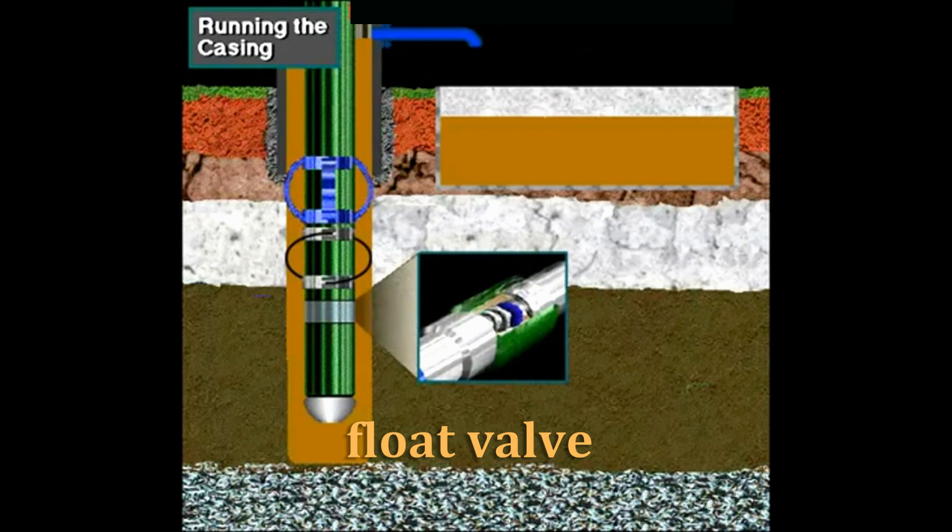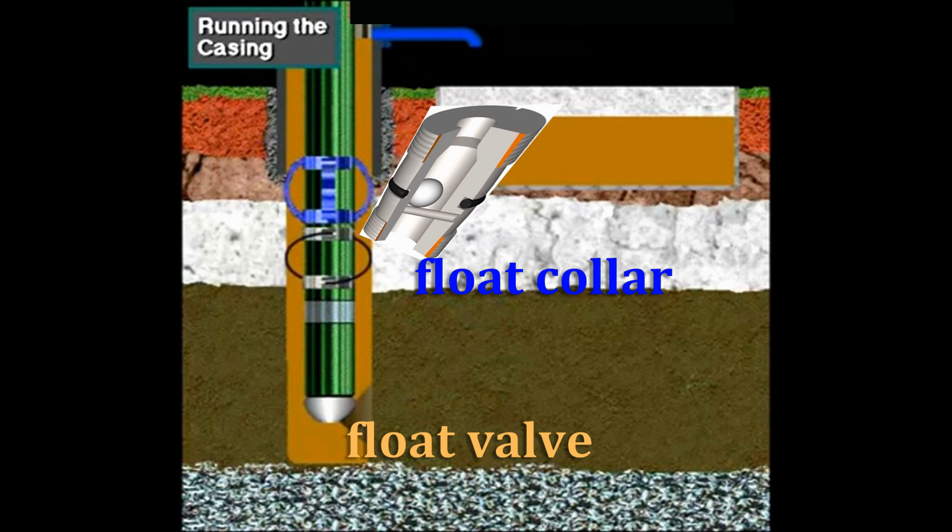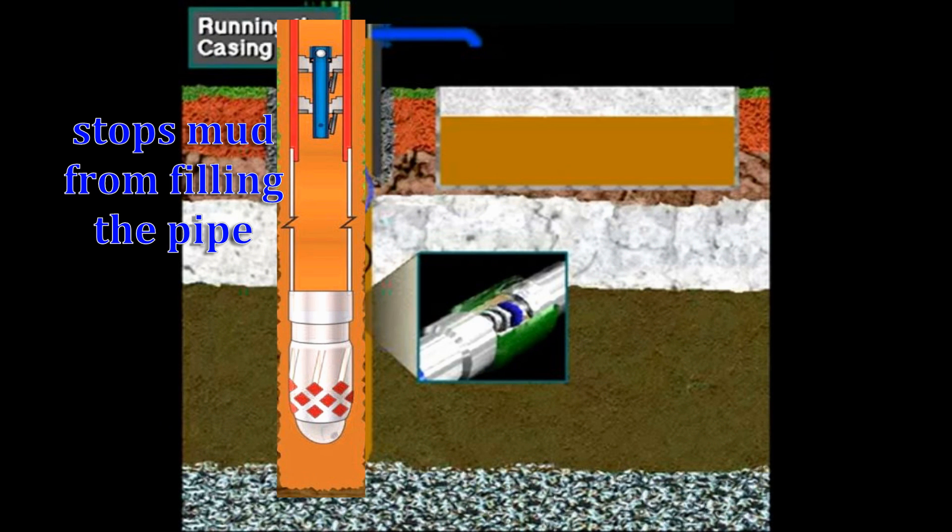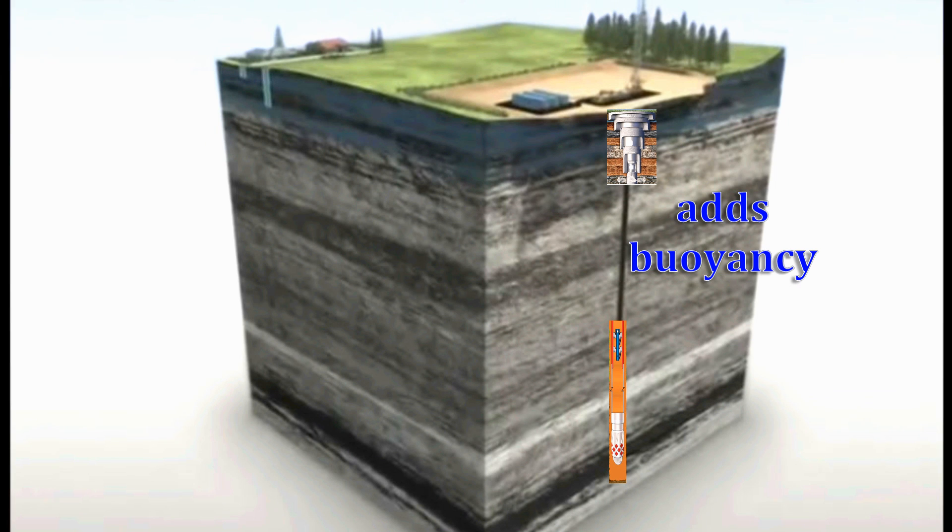Next is the float valve. It can sit either in a shoe called a float shoe or in a float collar located a joint or two above the shoe. The function of the float valve is to prevent mud from filling the pipe. It also provides buoyancy to the pipe which then lessens the load on the derrick and the top joint of the pipe.